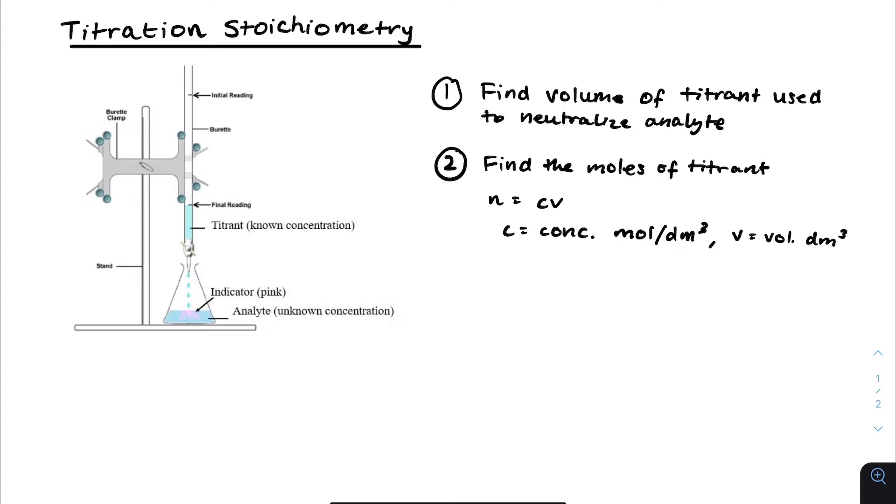You need to divide it by a thousand to get the volume in dm cubed. This is a common mistake made that can result in drastic errors. So N equals Cv is the formula for the number of moles, where N is moles. It's one of the formulas you might have learned in GCSE chemistry.